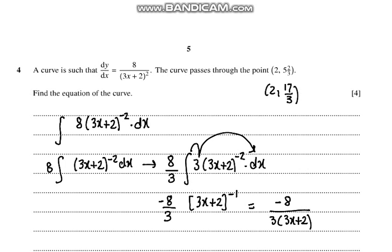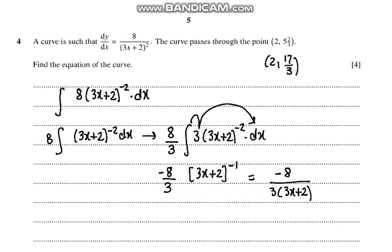Now we have the coordinate. We can find the integration constant. So that becomes 17/3 equals -8/3 times (3 times 2 + 2) plus c.